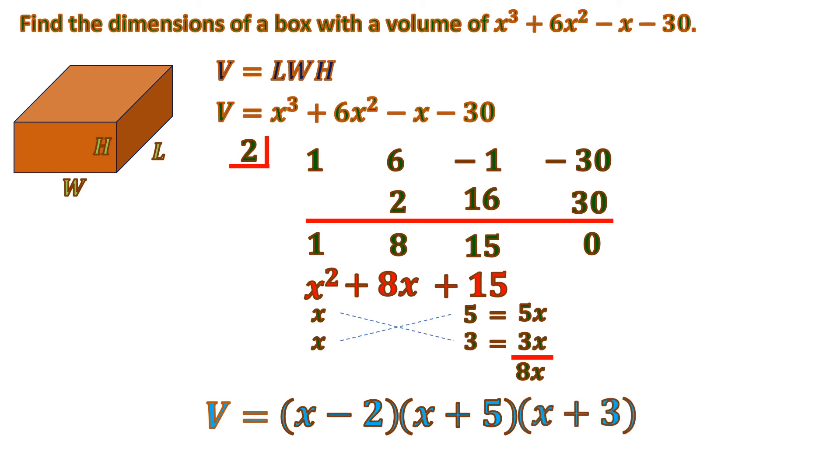This x minus 2 is actually the height because it's the lowest value. The x plus 5 is the longest because it's x plus 5, the other one is only x plus 3. So that will be the length, and the x plus 3 is the width. Those are the dimensions of the box.